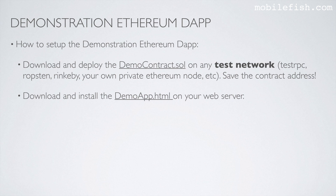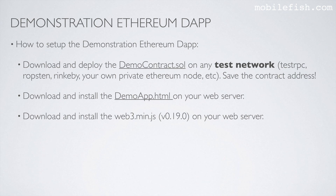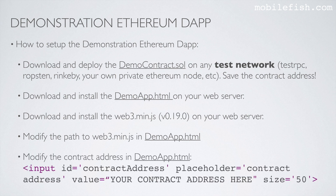Download and install the demoapp.html file on your web server. Download and install the web3.minify.js file on your web server — I've already shown you where you can find this file. Modify the path to web3.minify.js in demoapp.html, and modify the contract address in demoapp.html.